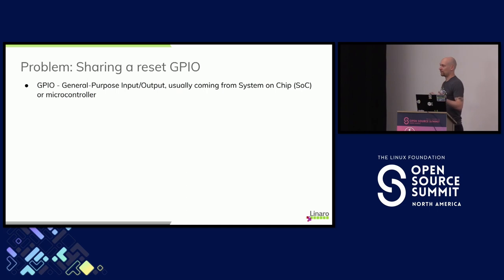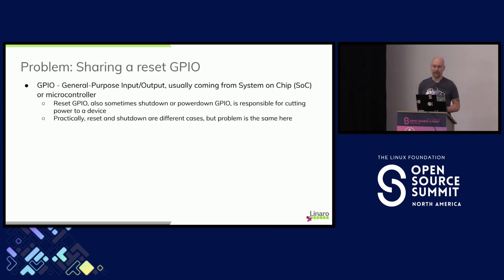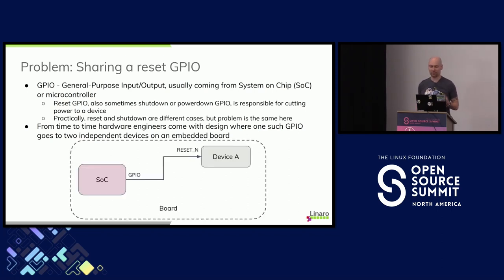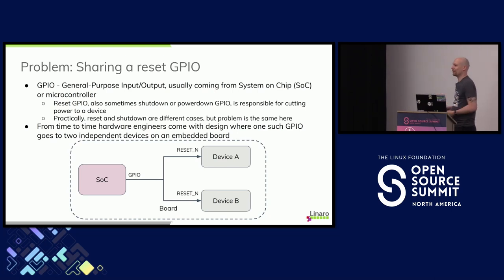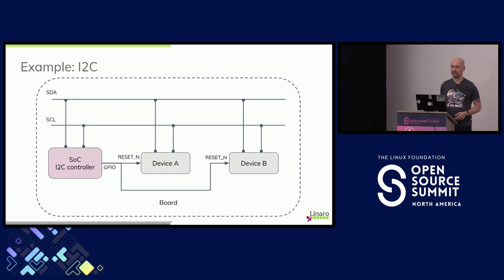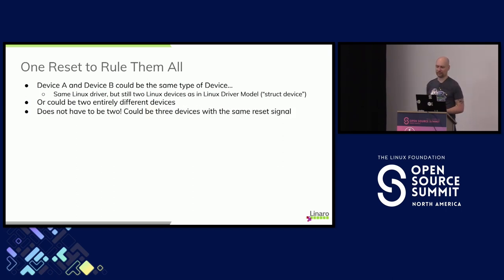So what's the problem? A GPIO comes from the SOC and it can reset a device. Here I call it reset, shut down, power down — these are actually different cases, but for the point of this talk, it's cutting power of some device. Even though this can be different pins, we still think of it as one GPIO. Hardware engineers can come up with a great solution where you have two devices and they are both reset by one GPIO. So you have the SOC, there's some pin going to device A, and there's also device B. When you reset device A, device B is also being reset. The devices A and B don't have to be the same type — I mean the same Linux driver. This could be entirely different devices with different drivers, and there could be more than two.